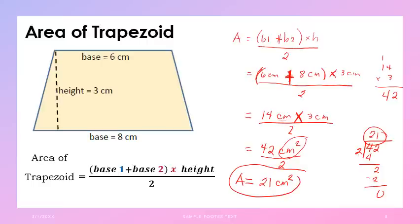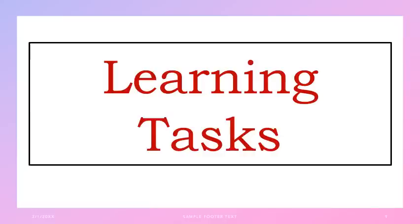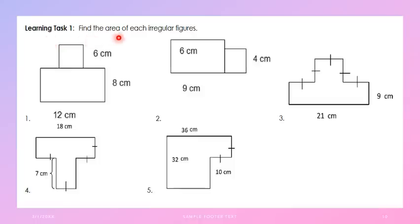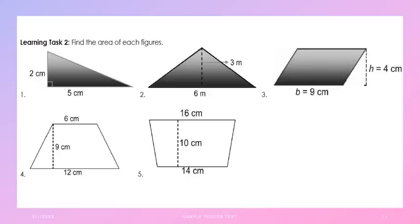That is how simple it is to solve the area of a trapezoid. Now, it's your turn to solve. Go to the learning tasks in your learner's packet. Learning task 1: find the area of each irregular figure. Learning task 2: find the area of each figure — number 1 and 2 are triangles, number 3 is a parallelogram, and numbers 4 and 5 are trapezoids.